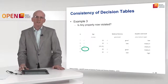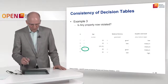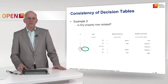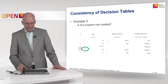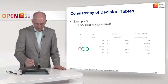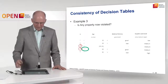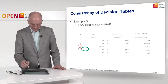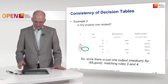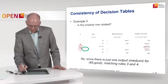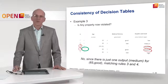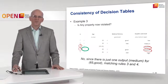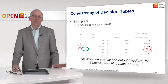Let's continue the example with a further change: rule 4 is now changed to allow greater or equal to 65. Now we check whether the any property is violated. Looking at input 65, good, we have two rows that match. But if we check the return values, both return medium. So yes, different rows match this input combination 65, good, but all of them have the same output. Therefore there is no violation, because any allows this.